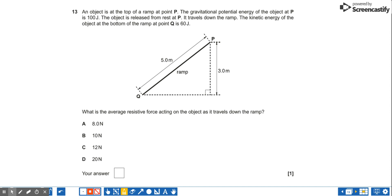An object is at the top of a ramp at point P. The gravitational potential energy of the object at P is 100 joules. The object is released from rest at P. It travels down the ramp. The kinetic energy of the object at the bottom of the ramp is 60 joules.